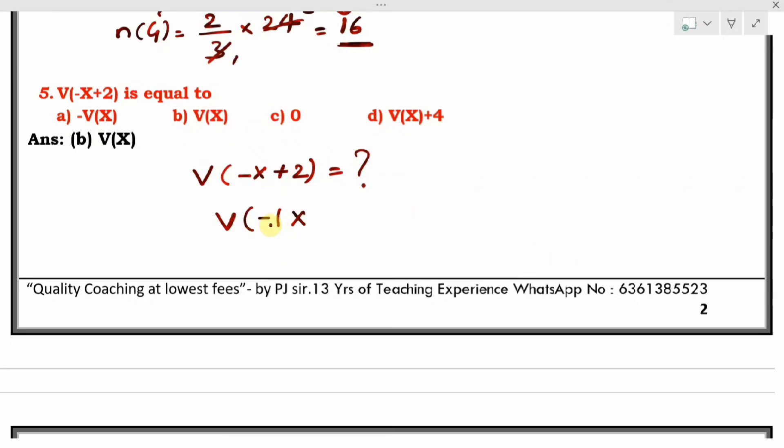When we are calculating variance, the constant will come out with a square. So (-1) squared times variance of X. This -1 I have taken as (-1) squared, and variance I kept inside as variance of X. And then plus variance of 2.